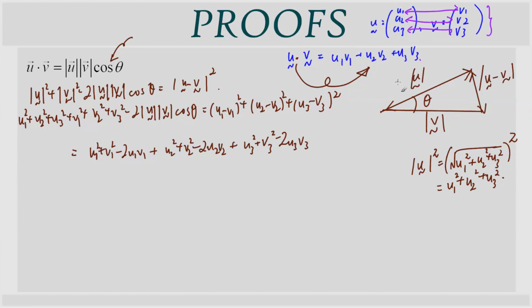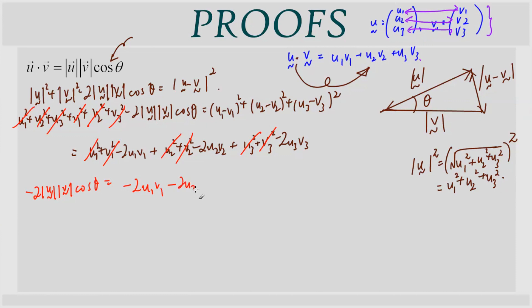Now let's do the cancellations. On the left-hand side we have the squared terms u1², u2², u3², v1², v2², v3², which cancel with those on the right-hand side. That leaves: −2|u||v|cosθ = −2u1v1 − 2u2v2 − 2u3v3. Dividing both sides by −2, we get the end result — something that looks exactly like the scalar product.